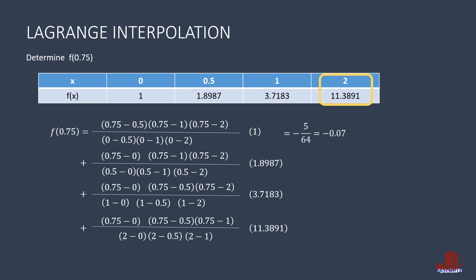Simplifying the first term, we get negative 0.07813, followed by the next as 1.1867, then 1.74296, and the last term is negative 0.17795.